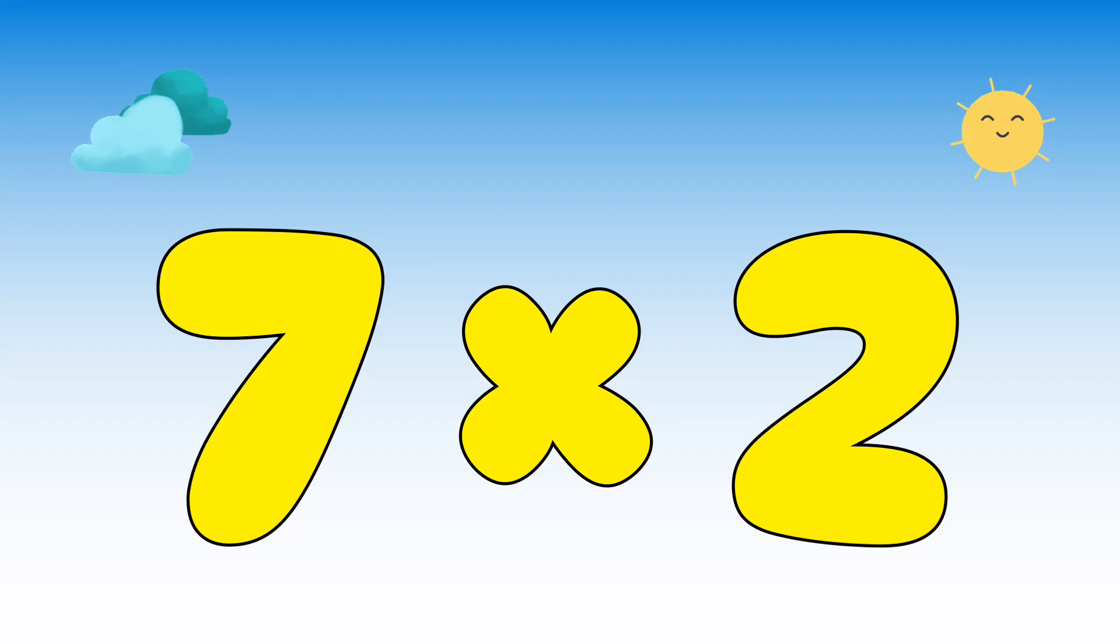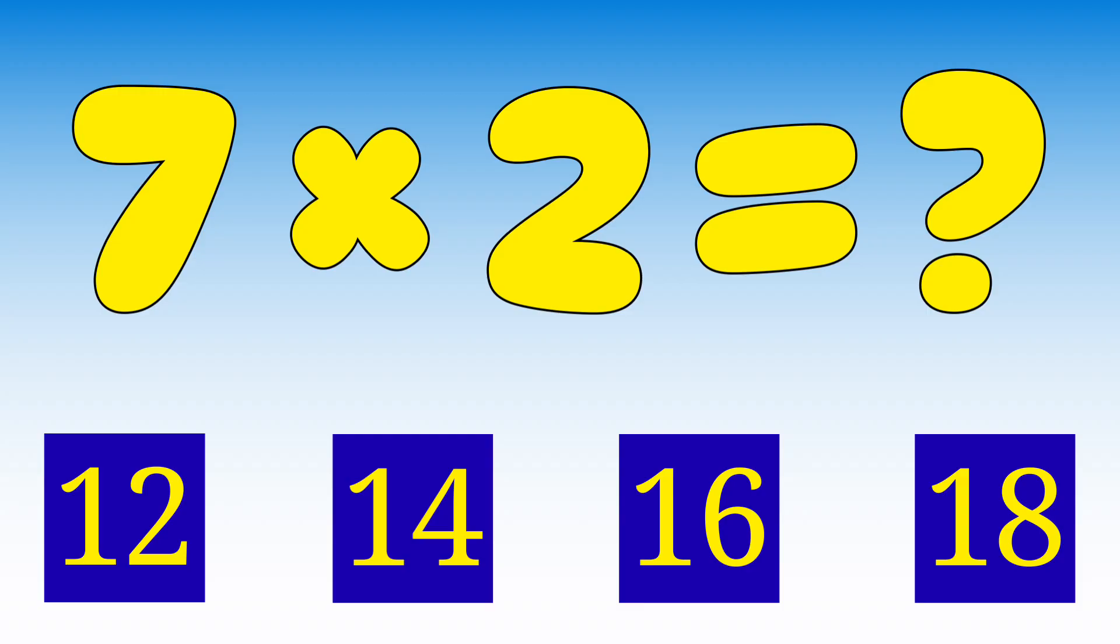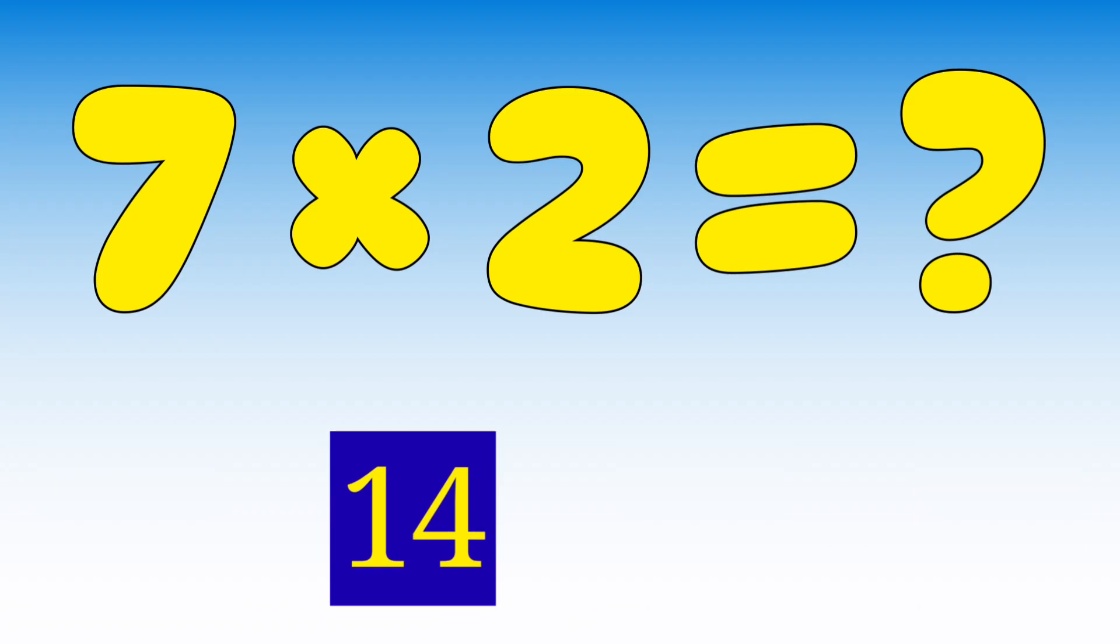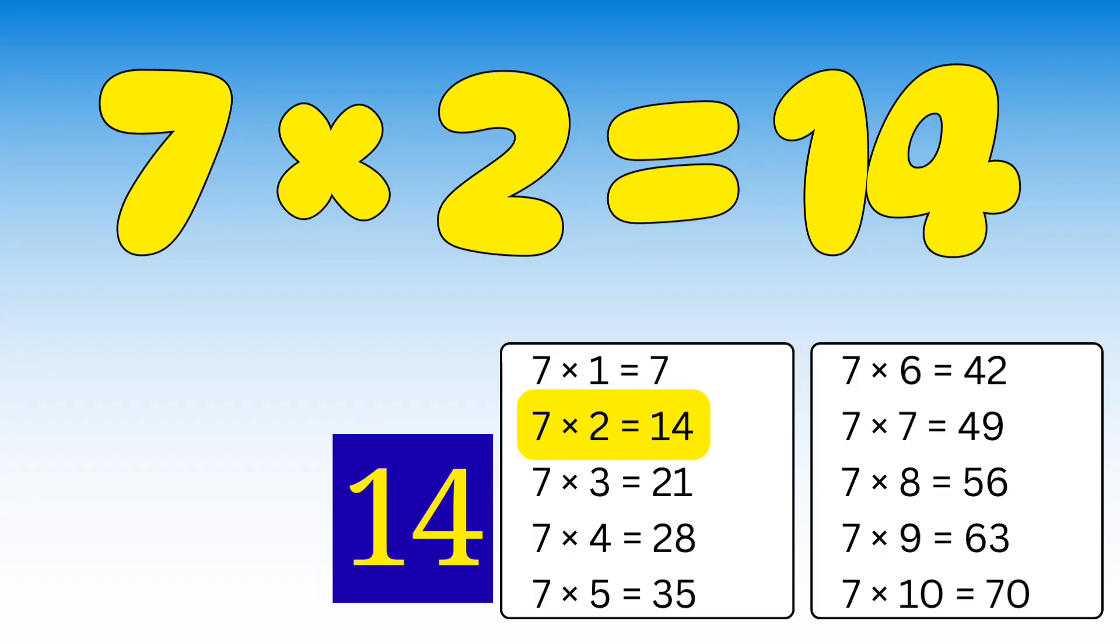Can you guess this one? What is 7 times 2? Let's check the options. Is it 12, 14, 16, or 18? Yes, 14! Brilliant job. 7 times 2 equals 14.